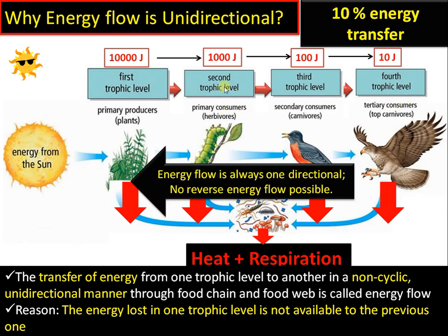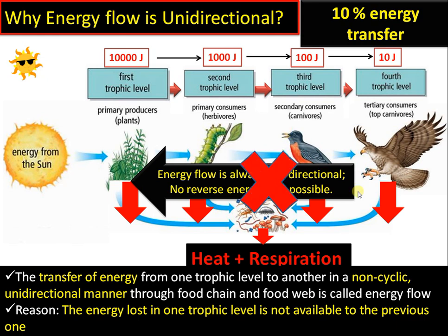Energy flow is called unidirectional because the energy available at the second trophic level is not available back at the first trophic level. Similarly, at the third and fourth trophic levels, once energy is transferred, it is not available to the previous organisms in the previous trophic levels. That is why energy flow is always unidirectional — no reverse energy flow is possible, as energy is lost forever while passing from one trophic level to the next.